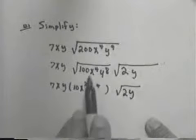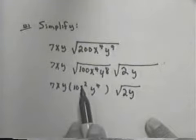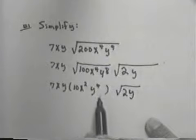The square root of 100 is 10. The square root of x to the 4th is x squared. The square root of y to the 8th is y to the 4th.